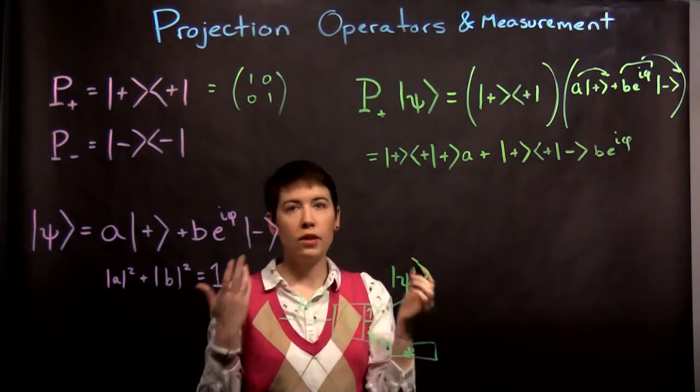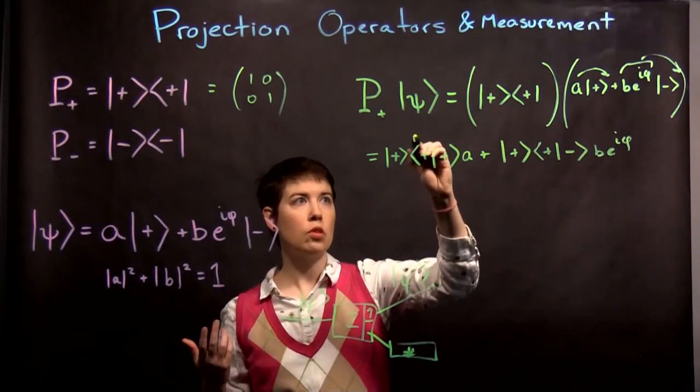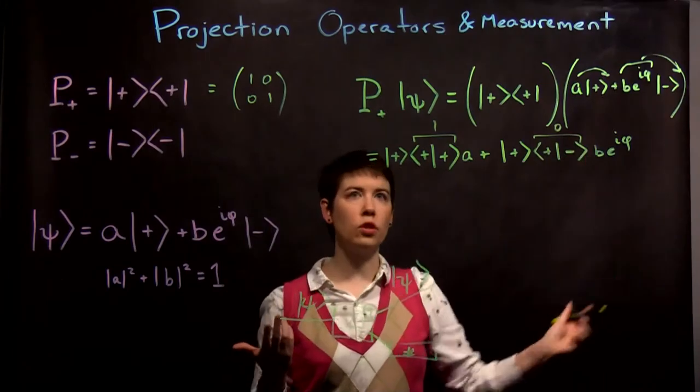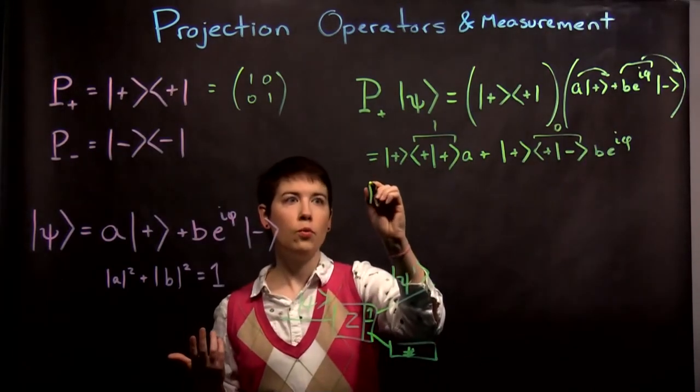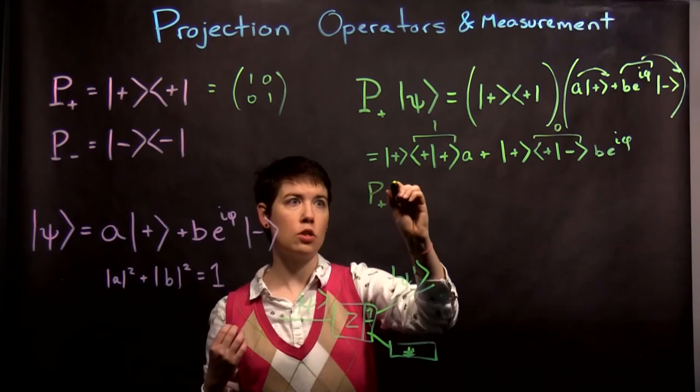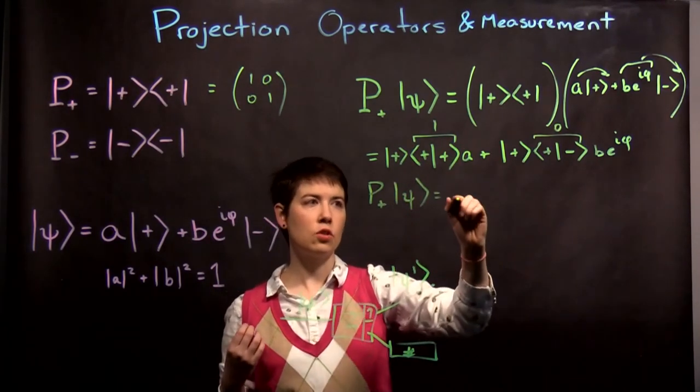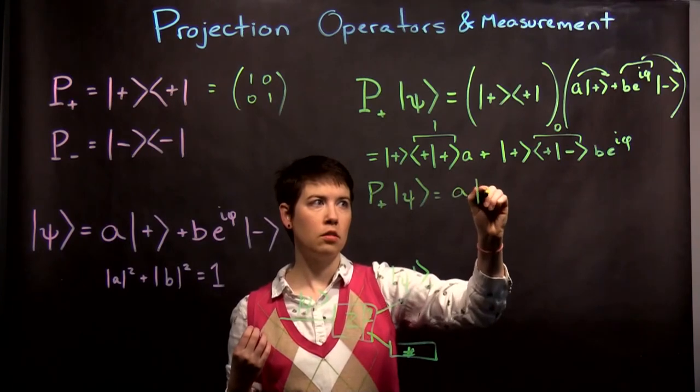So we have to go back to our orthonormality rules. This is one. This is zero. So this term is going to drop out. So when we applied our projection operator in the spin up direction to psi, what we're left with is actually just a spin up.